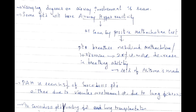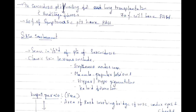In end-stage sarcoidosis patients waiting for lung transplantation, 70% will have pulmonary artery hypertension. Among symptomatic patients, 50% have pulmonary artery hypertension. Skin involvement is seen in one-third of patients with sarcoidosis.